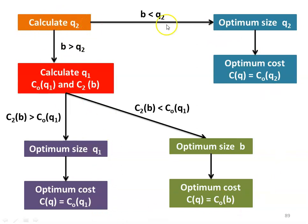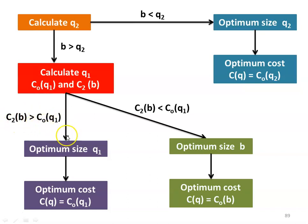First step: calculate Q2. Two conditions — if B < Q2, the optimum size is Q2 and optimum cost is C0(Q2). When B > Q2, calculate cost with three parameters Q1, C0(Q1), and C2(B). Again compare costs: if C2(B) > C0(Q1), optimum size is Q1 and optimum cost is C0(Q1). When C2(B) < C0(Q1), optimum size is B and optimum cost is C0(B). To understand the solution procedure, we have one or two numerical examples.